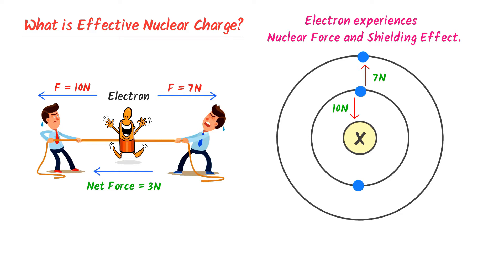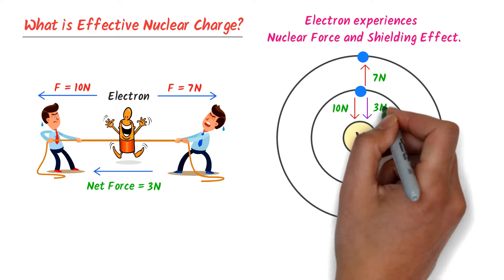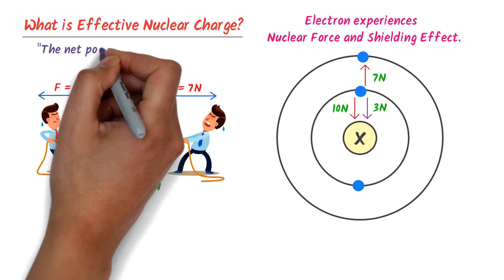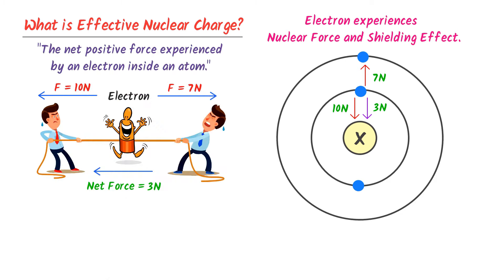which is also known as shielding effect. The net force is 3N on this electron in this direction. This net 3N force is known as effective nuclear charge. Therefore, we define effective nuclear charge as the net positive force experienced by an electron inside an atom.